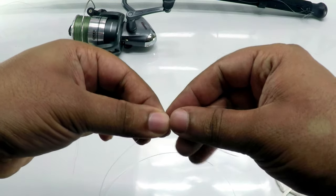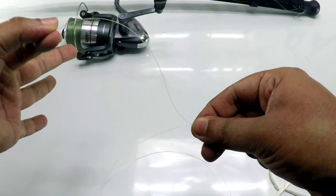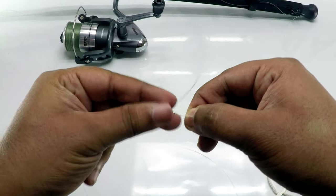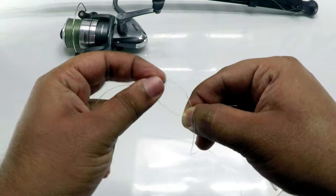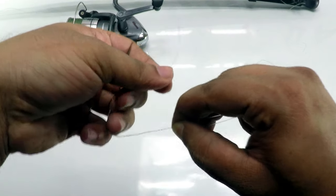Now I'm going to hold the line with two fingers and twist this main line over the shock leader one, two, three, four, five. Five times is more than enough.